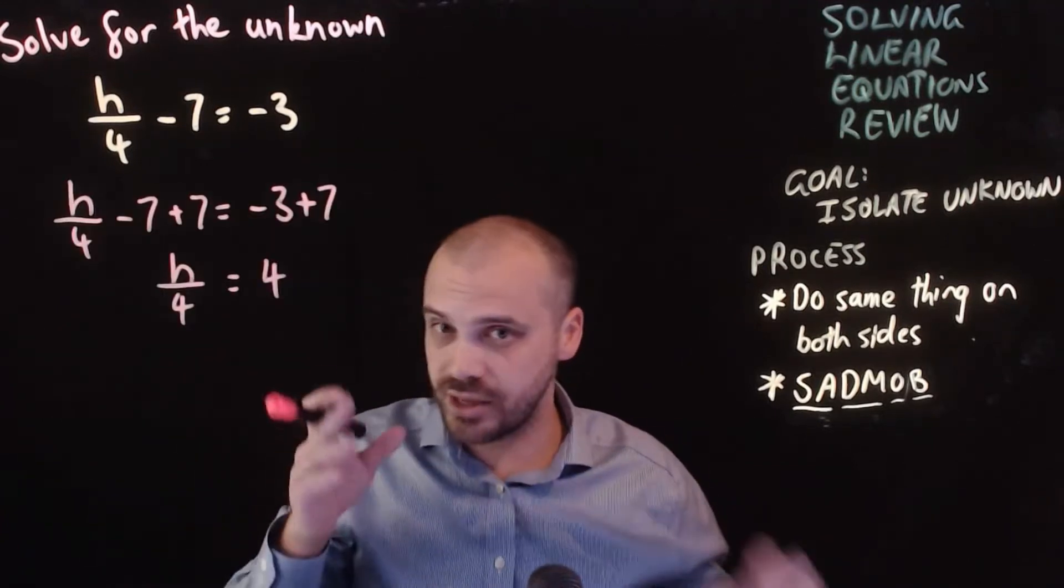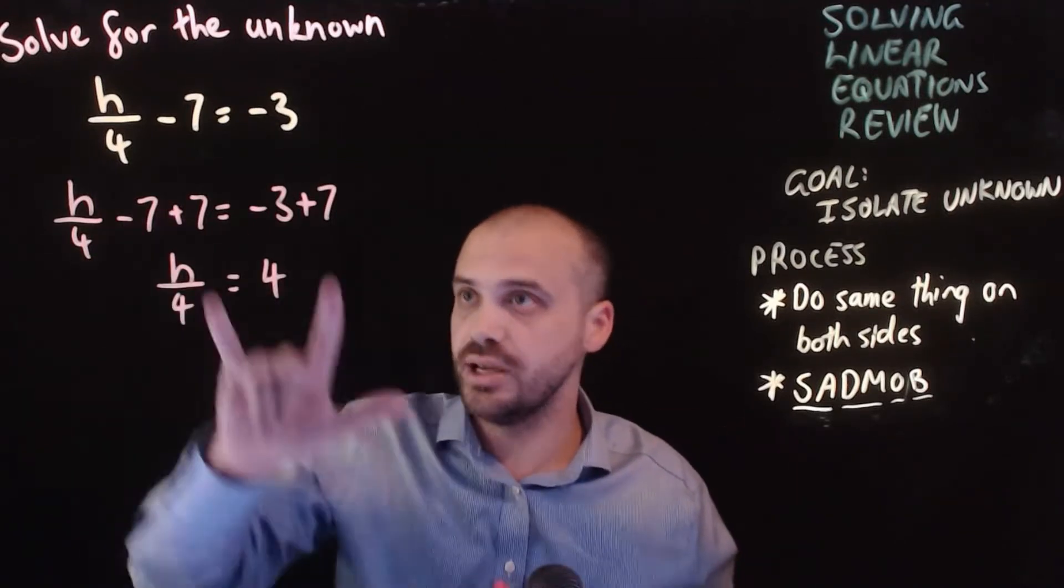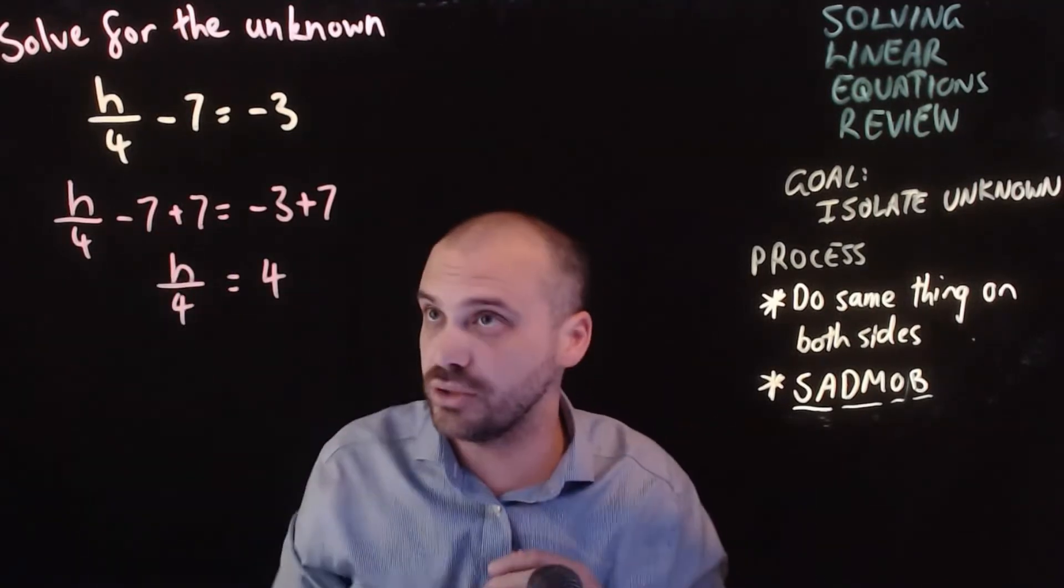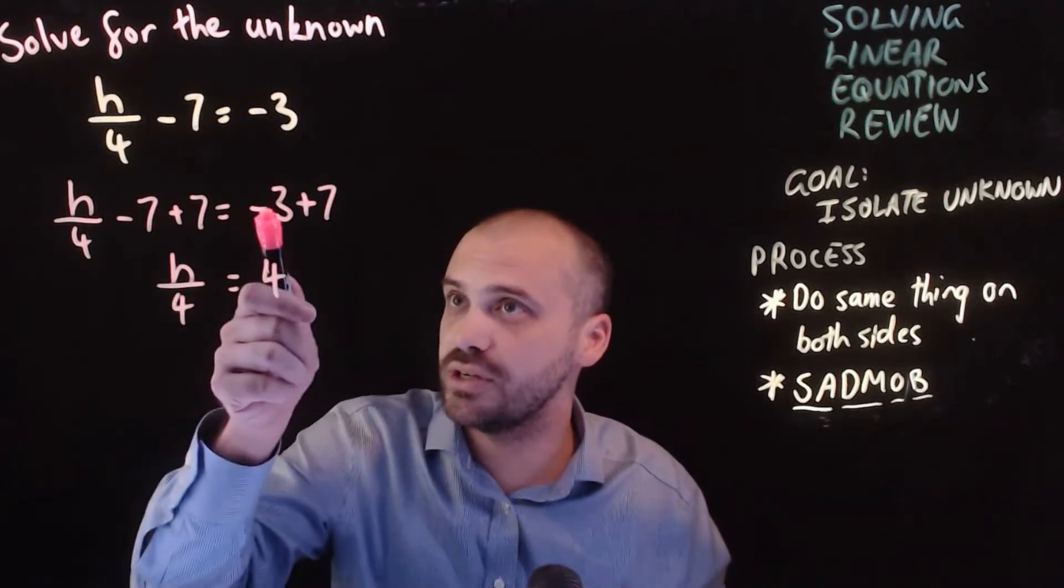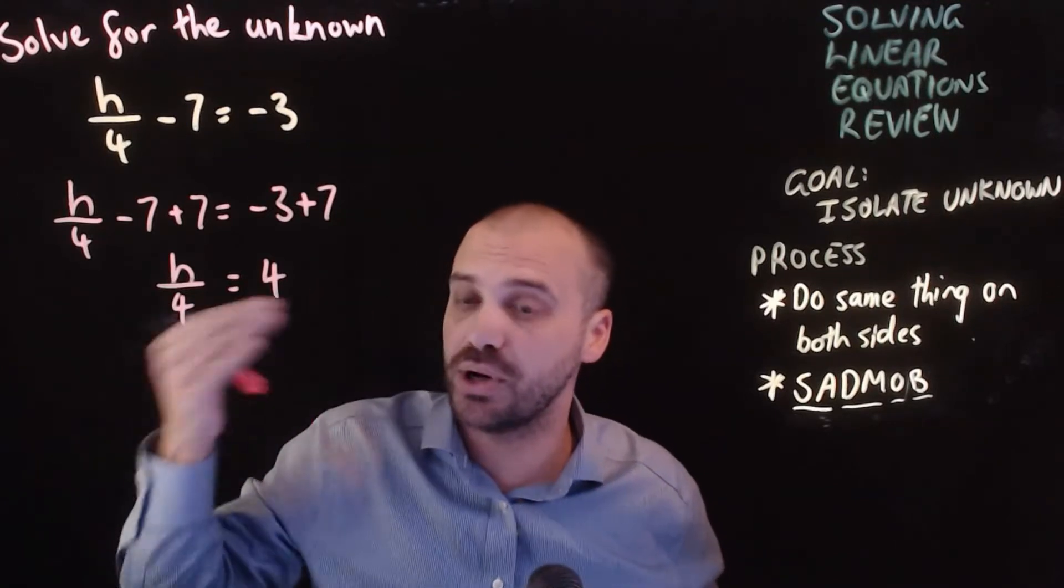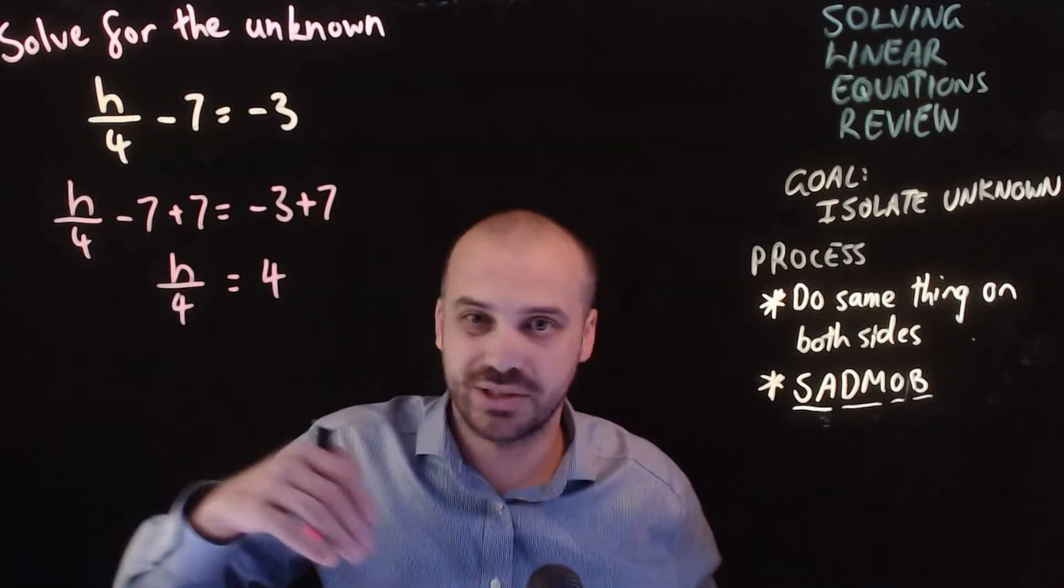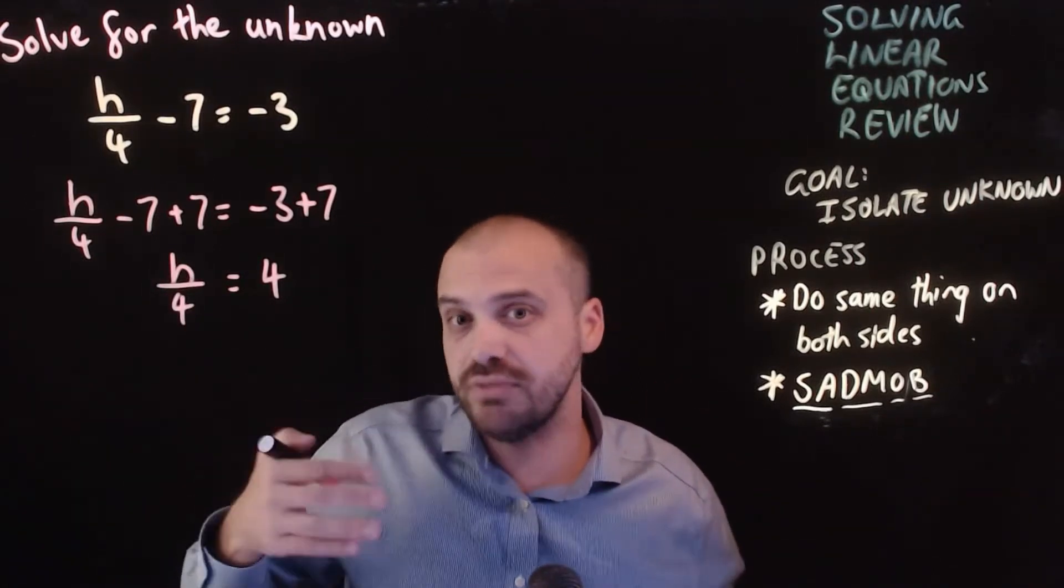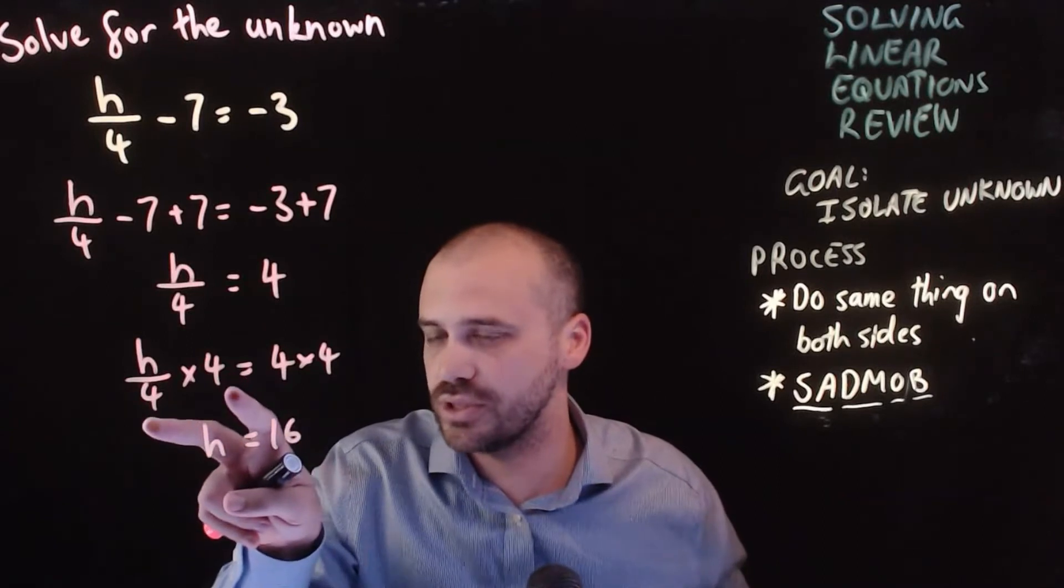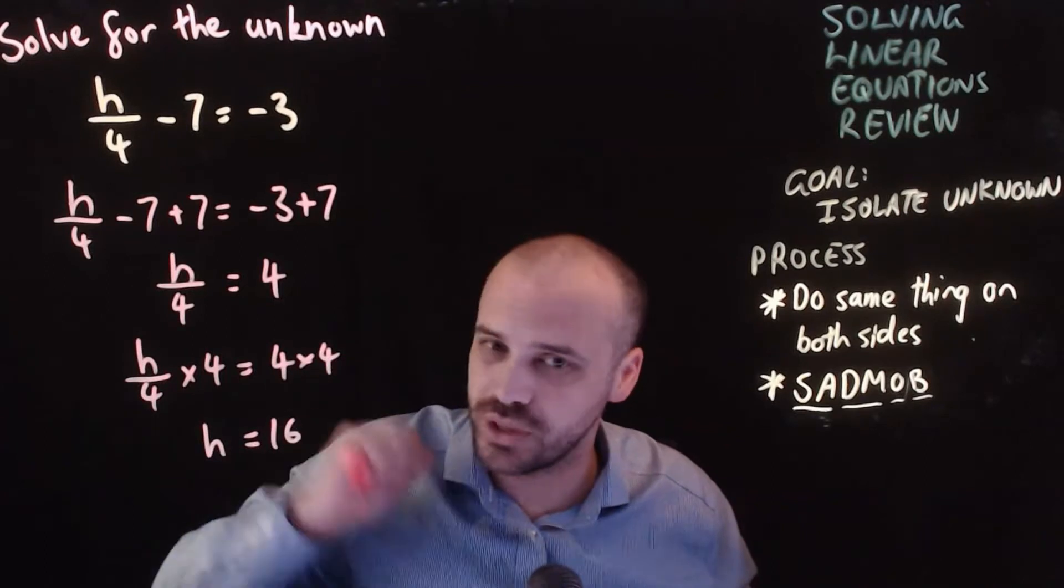Now, there are a lot of different ways to set this out. And you should run it by me in class if you want to talk about whether you're setting it out correctly. But this is one way to set it out. Adding 7 to both sides. Negative 7 plus 7. They're going to cancel each other out. That was the goal. We're left with h on 4 on the left hand side. Negative 3 plus 7 is 4 on the right hand side. Now, the final thing to get h by itself is to get rid of this 4 here. And it's a divide by 4. So, to get rid of a divide by 4, I need to use the inverse of that. Which is a multiply by 4. So, I'm going to multiply both sides by 4. Divide by 4, multiply by 4. The 4s cancel out. And 4 times 4 equals 16.